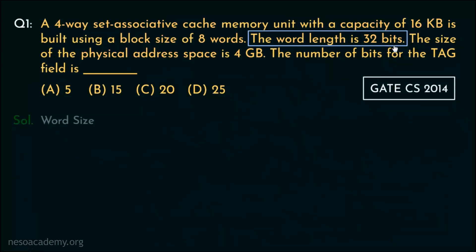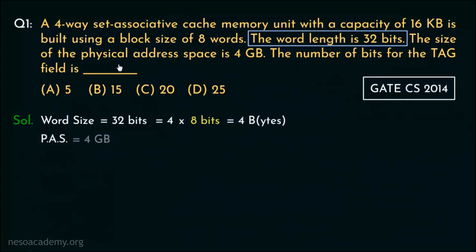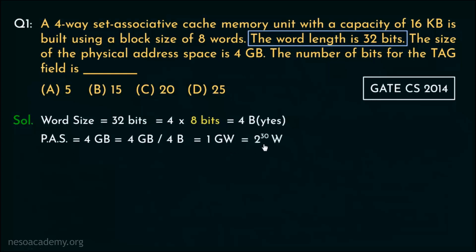Since the word length is mentioned as 32 bits, we can strip it down to 4 multiplied by 8 bits, which is 4 bytes. The physical address space is mentioned as 4 gigabytes. We need to convert this size in terms of words. Dividing the main memory size by the word size (4 bytes), we get 1 giga words — that is 2 to the power 30 words, because 1 giga is 2 to the power 30. Therefore the physical address will be 30 bits.